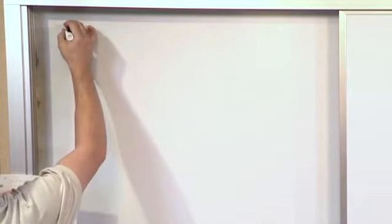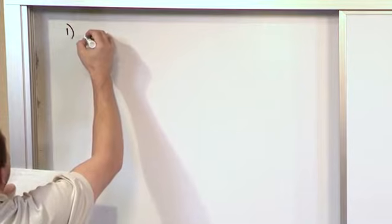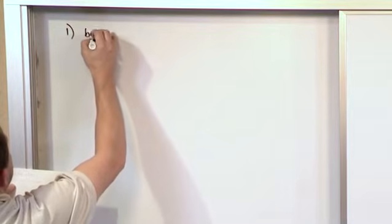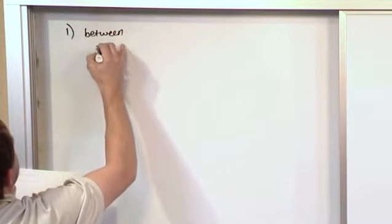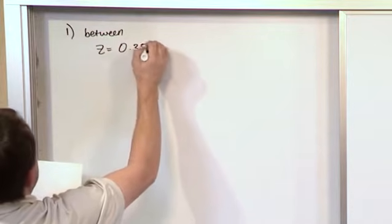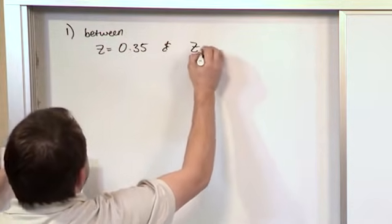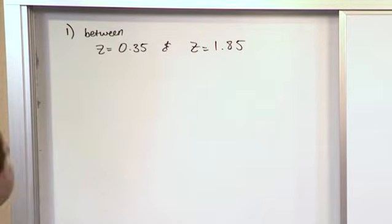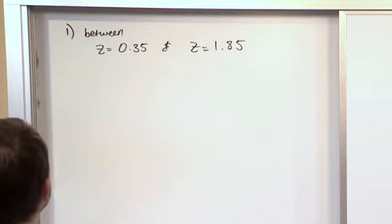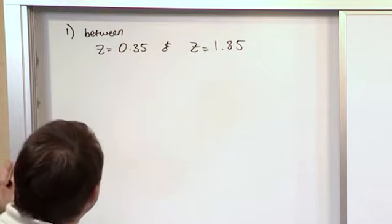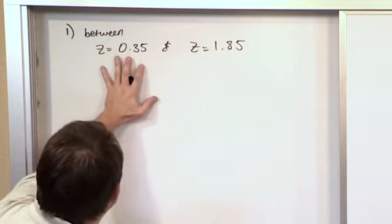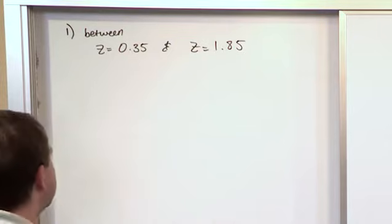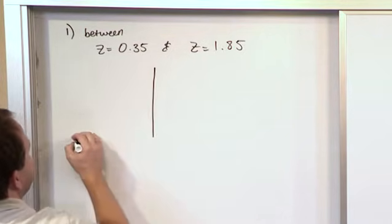For instance, you might have a problem where you want to find the area between z equals 0.35 and z equals 1.85. Let's say you had some problem trying to find the probability of some event happening and it ends up being that you want to find the area under the curve between this value of z and this value of z. This is a different kind of problem that we've had to tackle before.